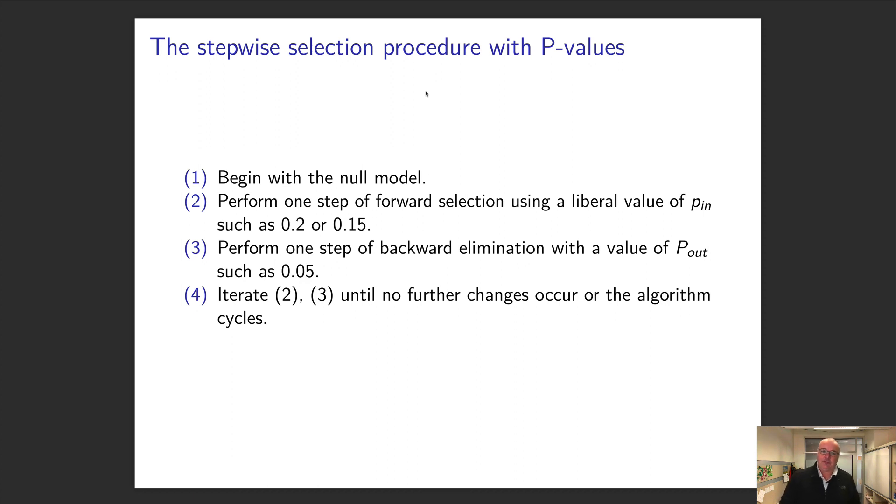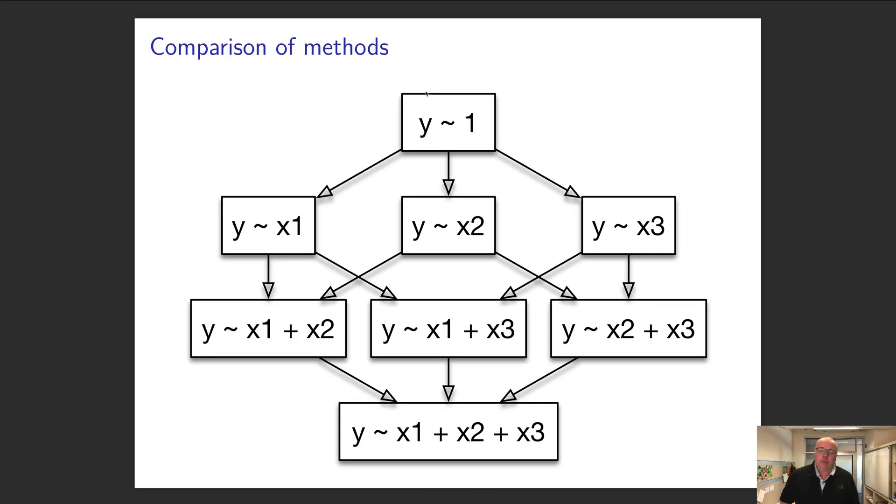Now we do stepwise. In forward, I started with the smallest and built up; in backward, I started with the biggest and built down. This one takes a step forward and a step back. I begin with the null model. I use a very liberal threshold—instead of 0.05, I might use 0.2 or 0.15 for adding terms in. Once I've added something in, I look at the model and say, could I take something out? But the taking out uses a much more stringent 0.05. I keep building up and taking off until no further changes occur.